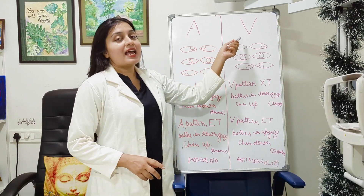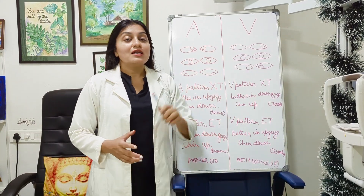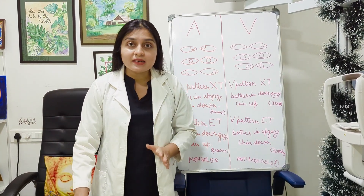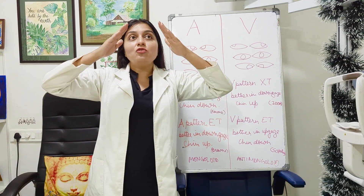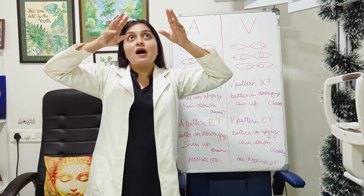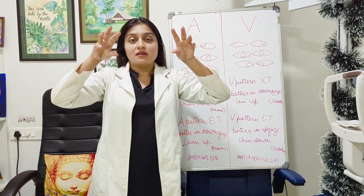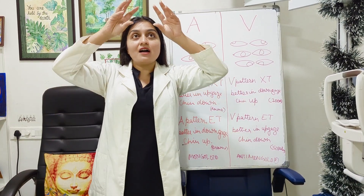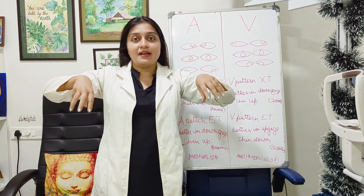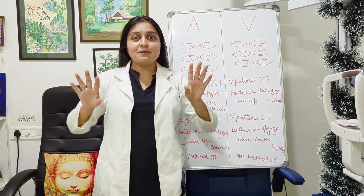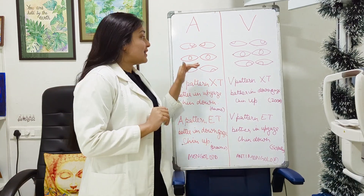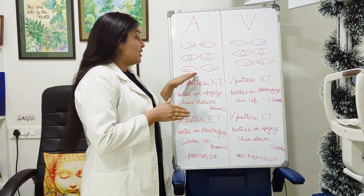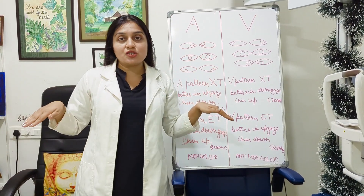So A pattern and V pattern — let's first cover A pattern. A pattern means that when you look up, the eyes go in, and when you look down, the eyes go out — just like the letter A. Simple. That is A pattern: when you look up, eyes go in; when you look down, eyes go out.